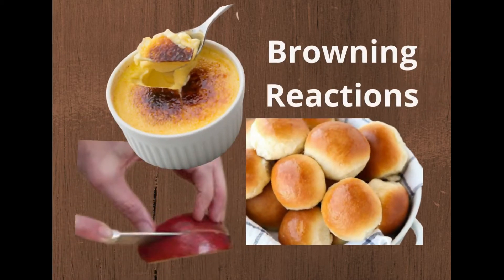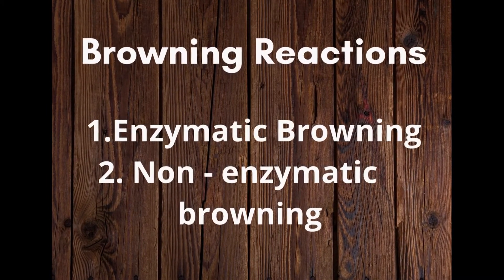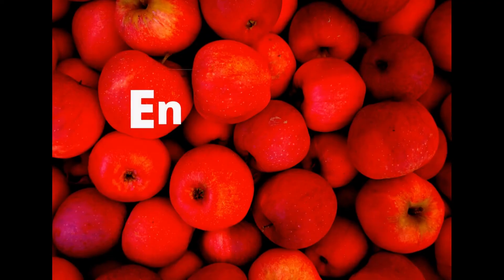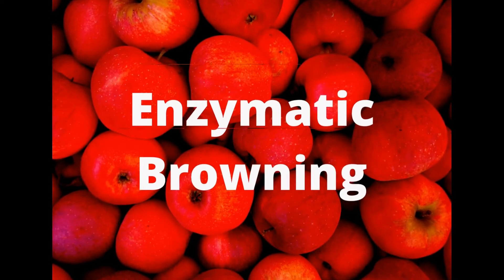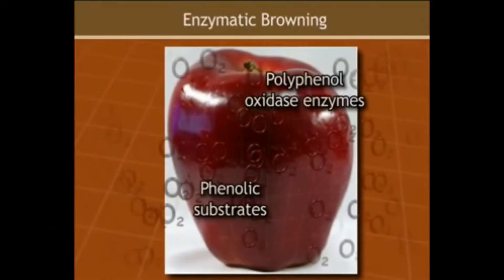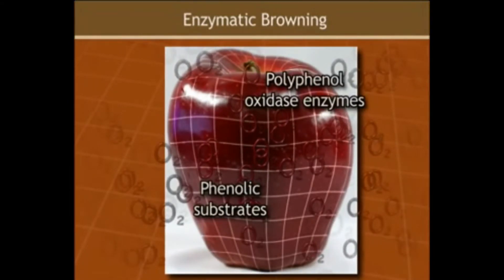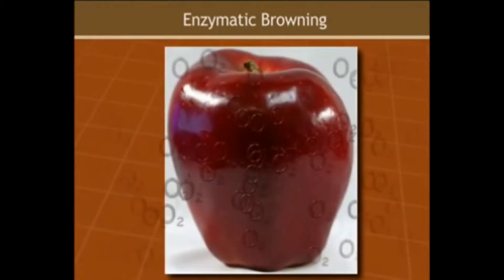There are two types of browning reactions: enzymatic browning and non-enzymatic browning. In enzymatic browning, phenols and the enzyme polyphenol oxidase, also known as phenolase, can be found in the cells of fruits and vegetables.